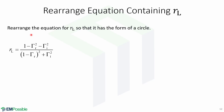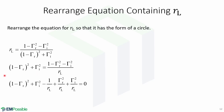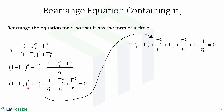Now, for RL, we will rearrange the equation so that it has the form of a circle. Starting from this equation, we move RL to the denominator, then the denominator to the left side. Then we move all of the terms to the left side and distribute RL in every term.